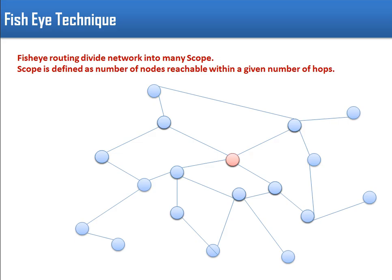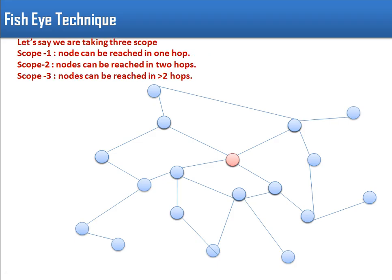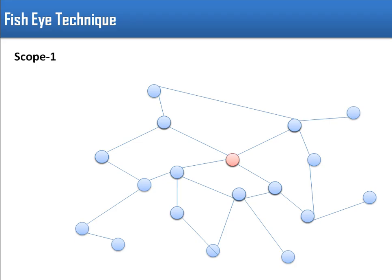In order to solve these issues, Fish Eye State Routing was introduced. Fish Eye State Routing uses the fisheye technique, which divides our network into multiple scopes. A scope is defined as the number of nodes reachable within a given number of hops. For example, considering a center node and dividing the network into three scopes: in scope 1, all nodes having distance one hop are considered; in scope 2, all nodes having distance two hops; and scope 3 covers nodes reachable from the center node at more than two hops.